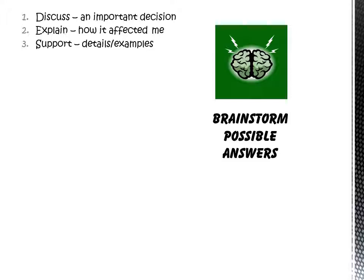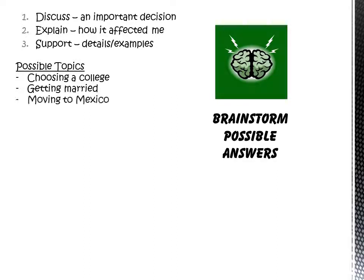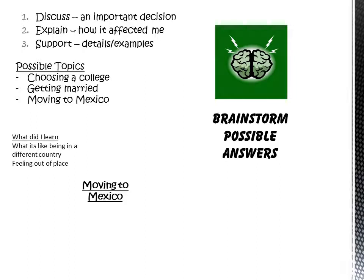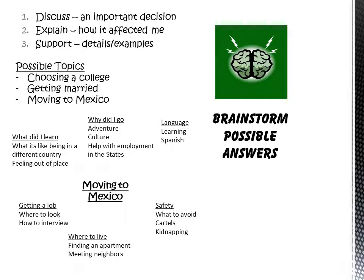Next, brainstorm possible answers. We've got three things to do in this essay: discuss an important decision, explain how it affected us, and support that with details and examples. Write down some possible topics. Maybe choosing a college, getting married, or moving to Mexico. Pick one — let's go with moving to Mexico. Then free-write every detail you can think of that may contribute to the story: what I learned, what it's like being in another country, why I went, adventure, culture, how it helped with employment in the States, learning Spanish, getting a job, where to live, safety.